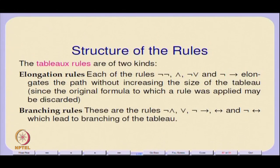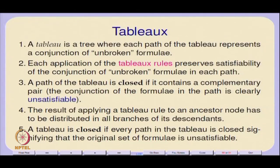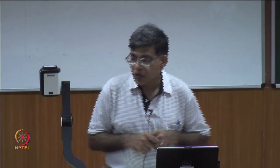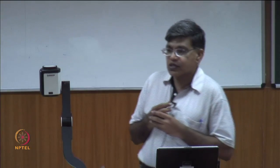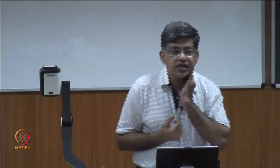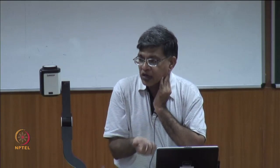What you essentially do is apply a rule — you think of it as symbol pushing — and you apply a rule. What you get is elongation and branching. A tableau is a tree, and you take each path in this tree of what might be called unbroken formulae. There is an implicit concept of a formula being broken up, and when you break up a formula you can essentially discard the original formula — you just need to keep the denominator.